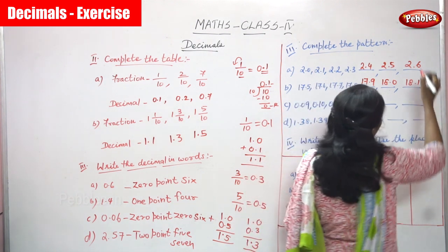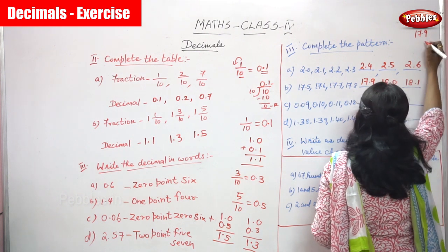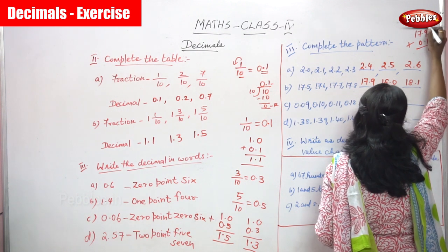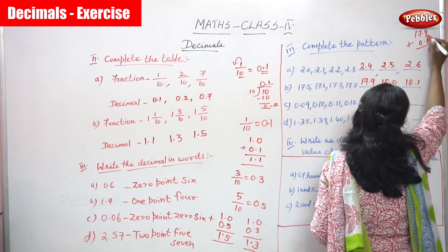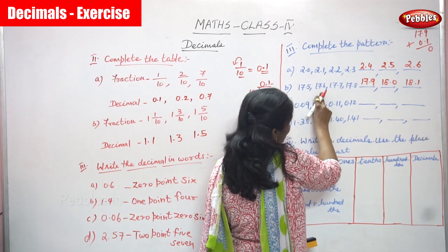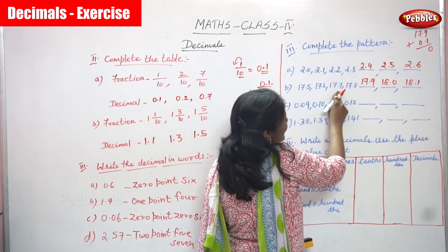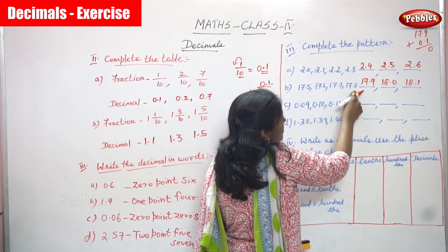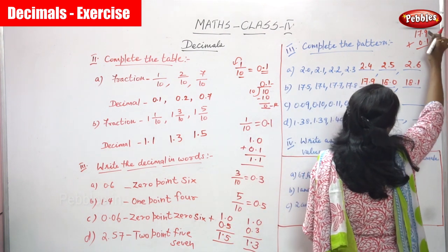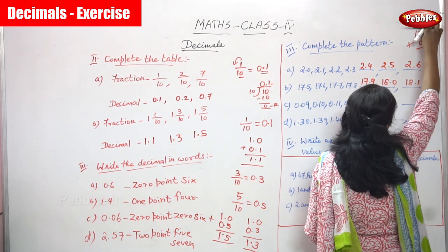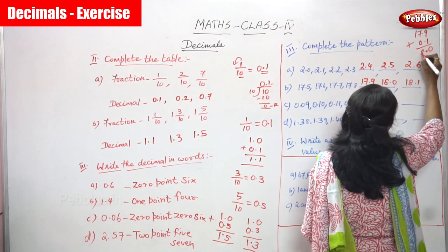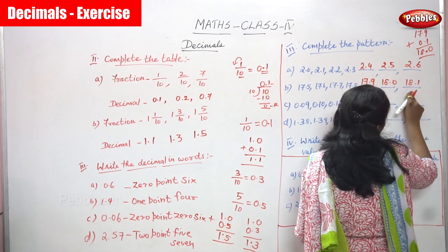You may have some doubts about how 17.9 becomes 18.0. Decimal means you add 0.1 each time. So 9 plus 1 is 10 — write 0 and carry over 1. That 1 goes to the top. 17.9 plus 0.1: 9 plus 1 is 10, write 0, carry 1, then 7 plus 1 is 8. Put a point — don't forget to put the point. Bring down the 1. So you get 18.0, then 18.1.